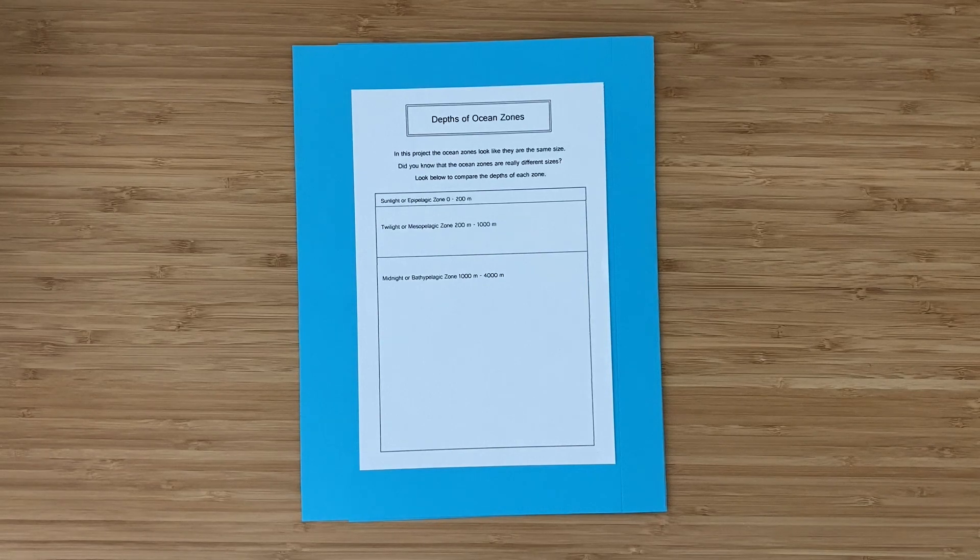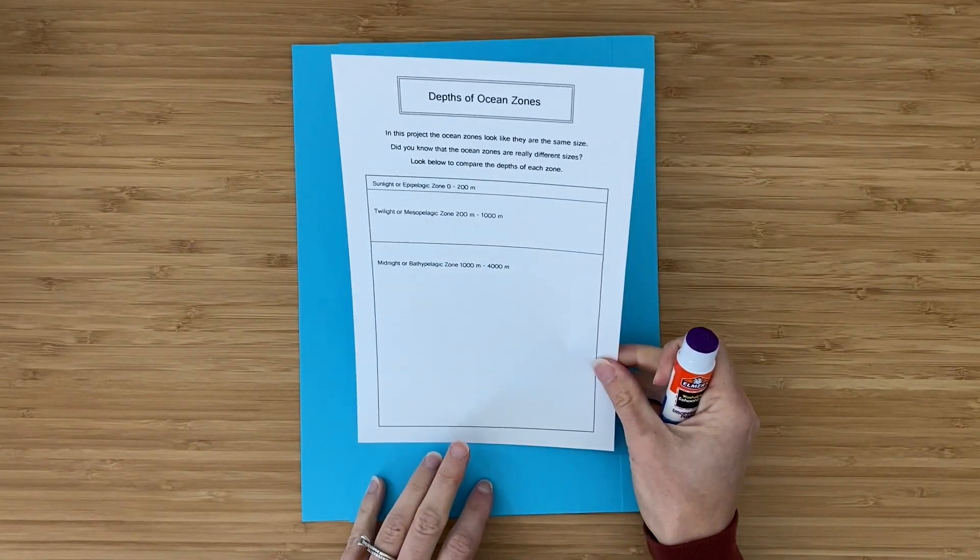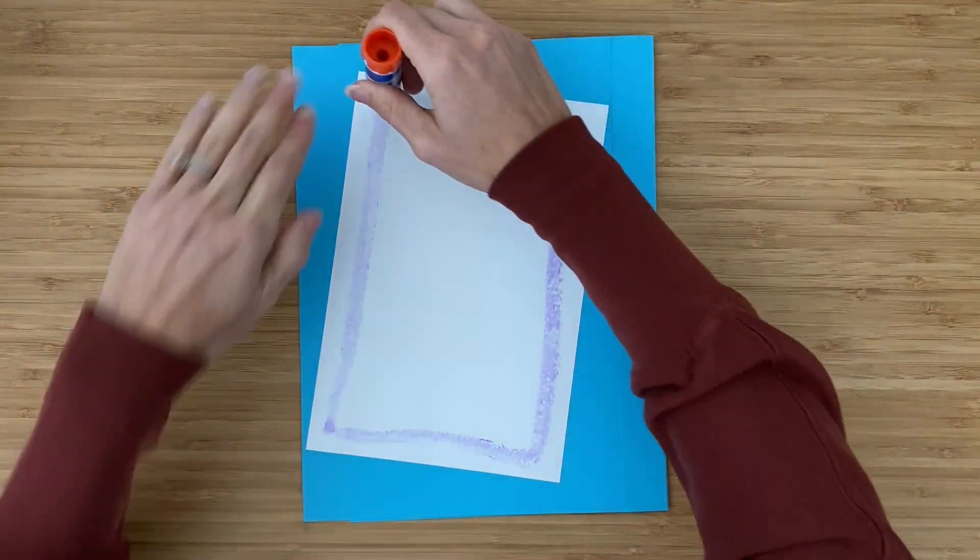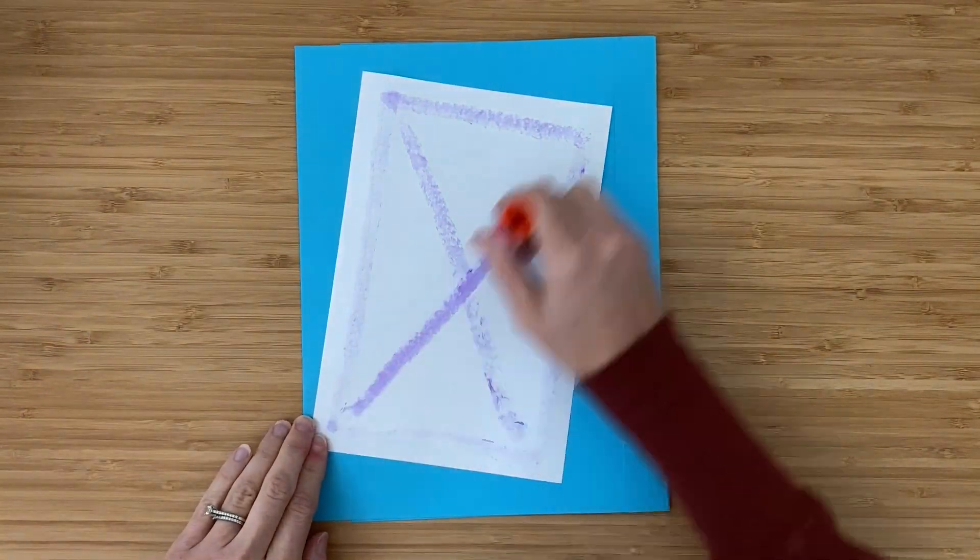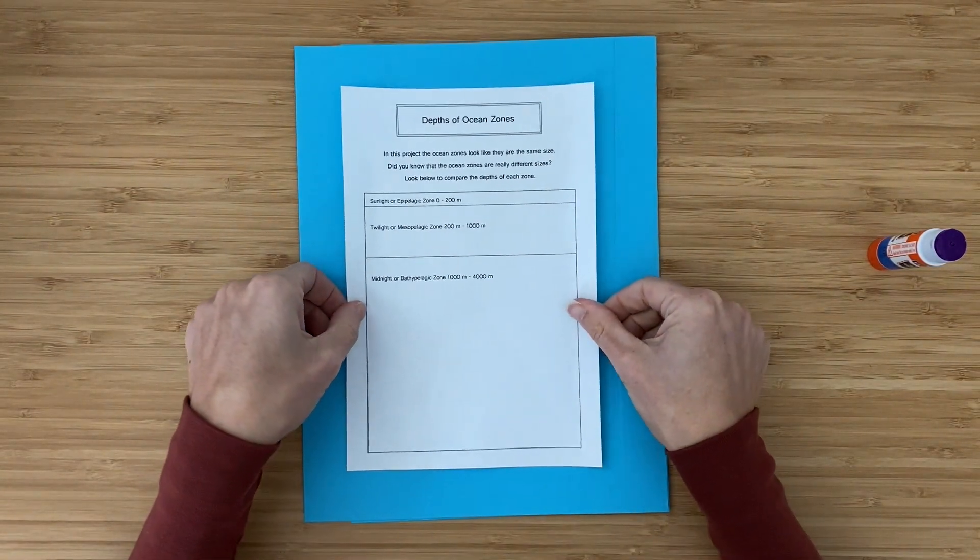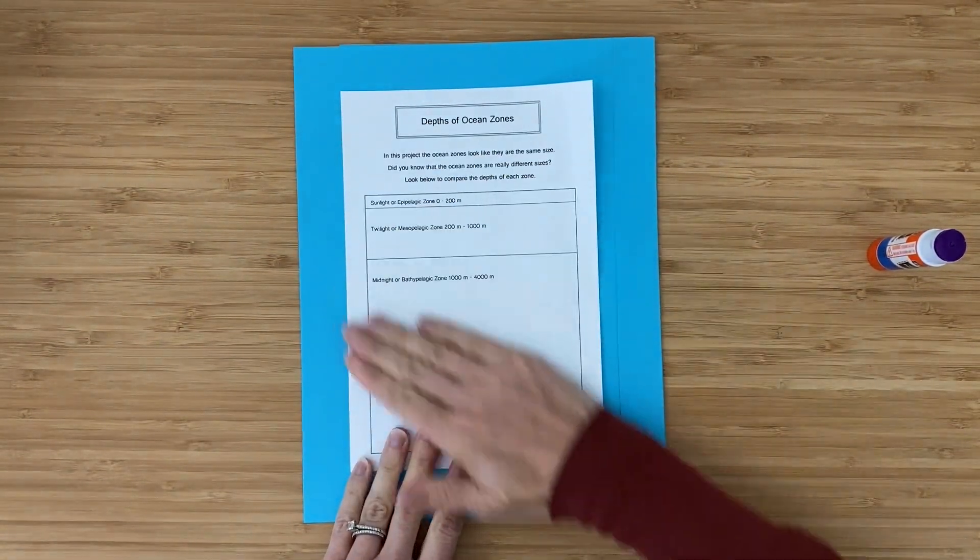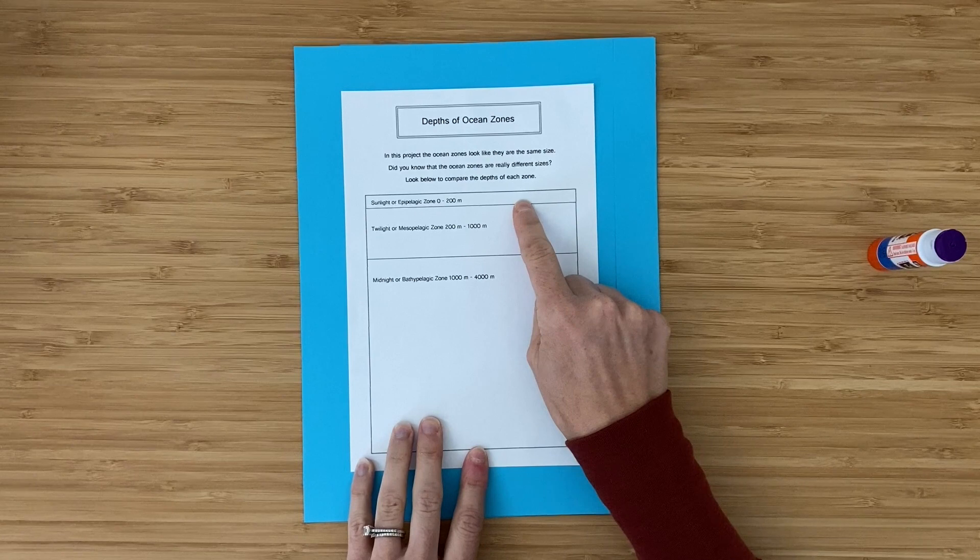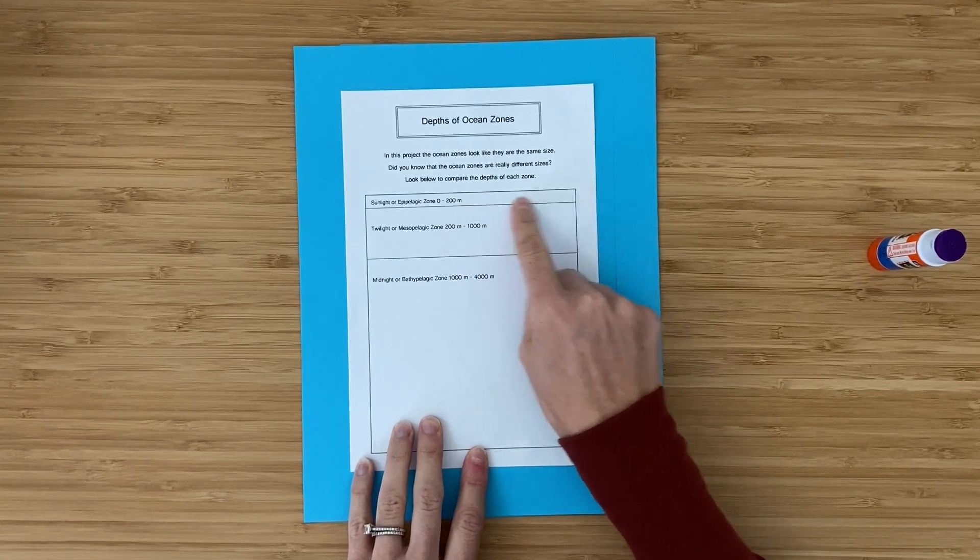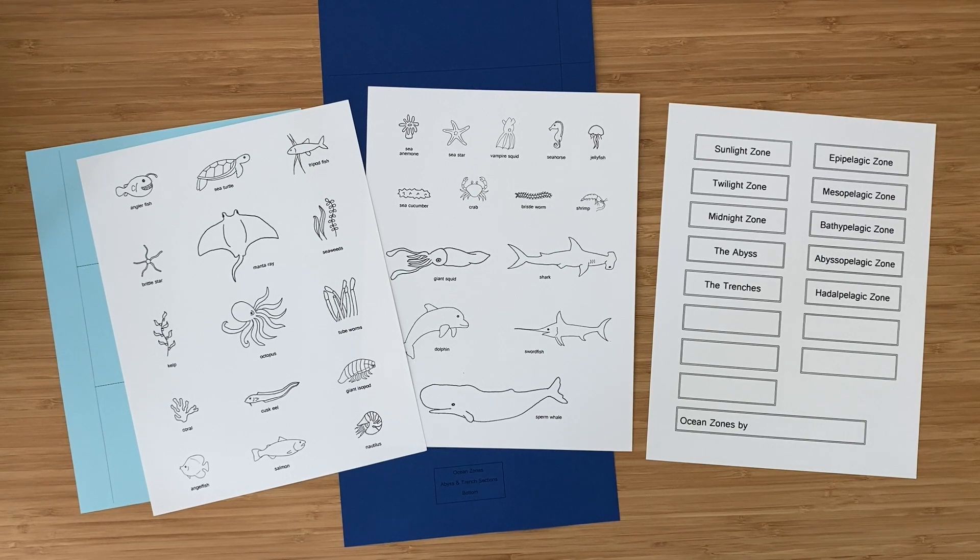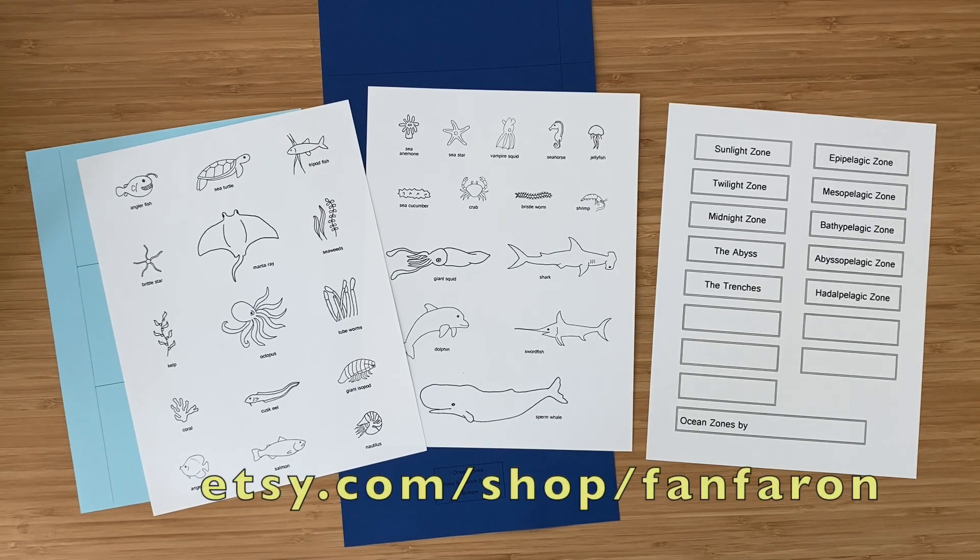One final thing that you might want to do is cut this depths of the ocean zones visual out and glue it to the back of your project. It helps you see that the ocean zones aren't the same sizes the way they look on the front of this project. We had to make them the same sizes in the project because the sunlight zone is so tiny that there's no way I could fit all those animals and plants that live there in this section.